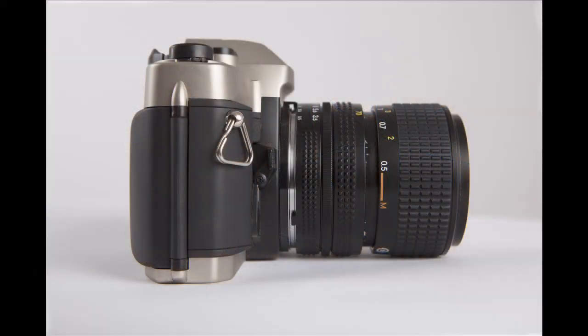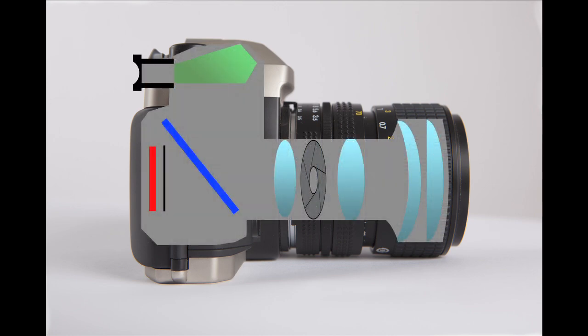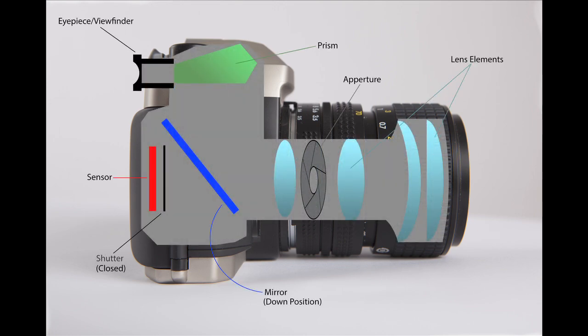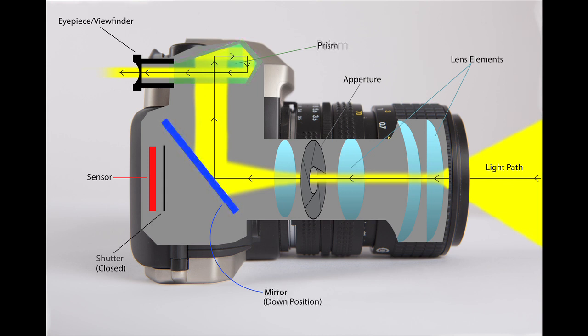With the SLR system, the light is reflected from the lens directly into the viewfinder, giving the photographer the exact same image in the viewfinder as will be captured by the camera sensor. The term reflex refers to the mirror system that allows for this redirecting of the light. As the light passes through the lens, it first hits a mirror, which reflects the light upward into a prism that then redirects and re-orients the light into the viewfinder, showing the image that is about to be taken.